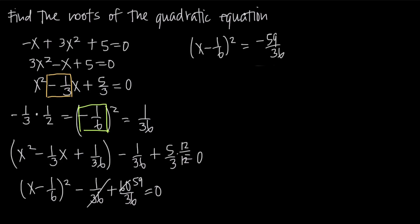Now remember, the whole purpose of this was to find the roots of the quadratic equation, and we completed the square. What we need to do is solve for x in order to find the roots. Our next step is to take the square root of both sides — the square root of the left-hand side, and the positive or negative square root of negative 59 over 36 on the right-hand side.